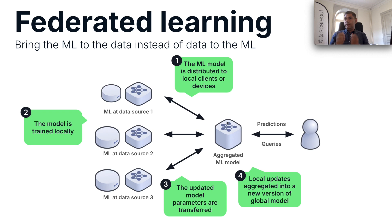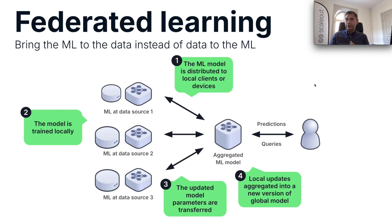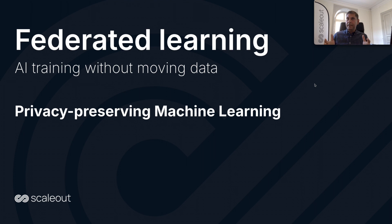The server receives the local models, does the aggregation, prepares a new model, and sends the same message to the clients again: use the new model with your local data and run a couple of epochs, then send the model back. This whole process runs iteratively, and after some time the system generates a global model that is a good representation of the local data sets available on the client side — without the need for data to be moved from client side to server side. Because of this nature, federated machine learning is often considered a privacy-preserving training environment.